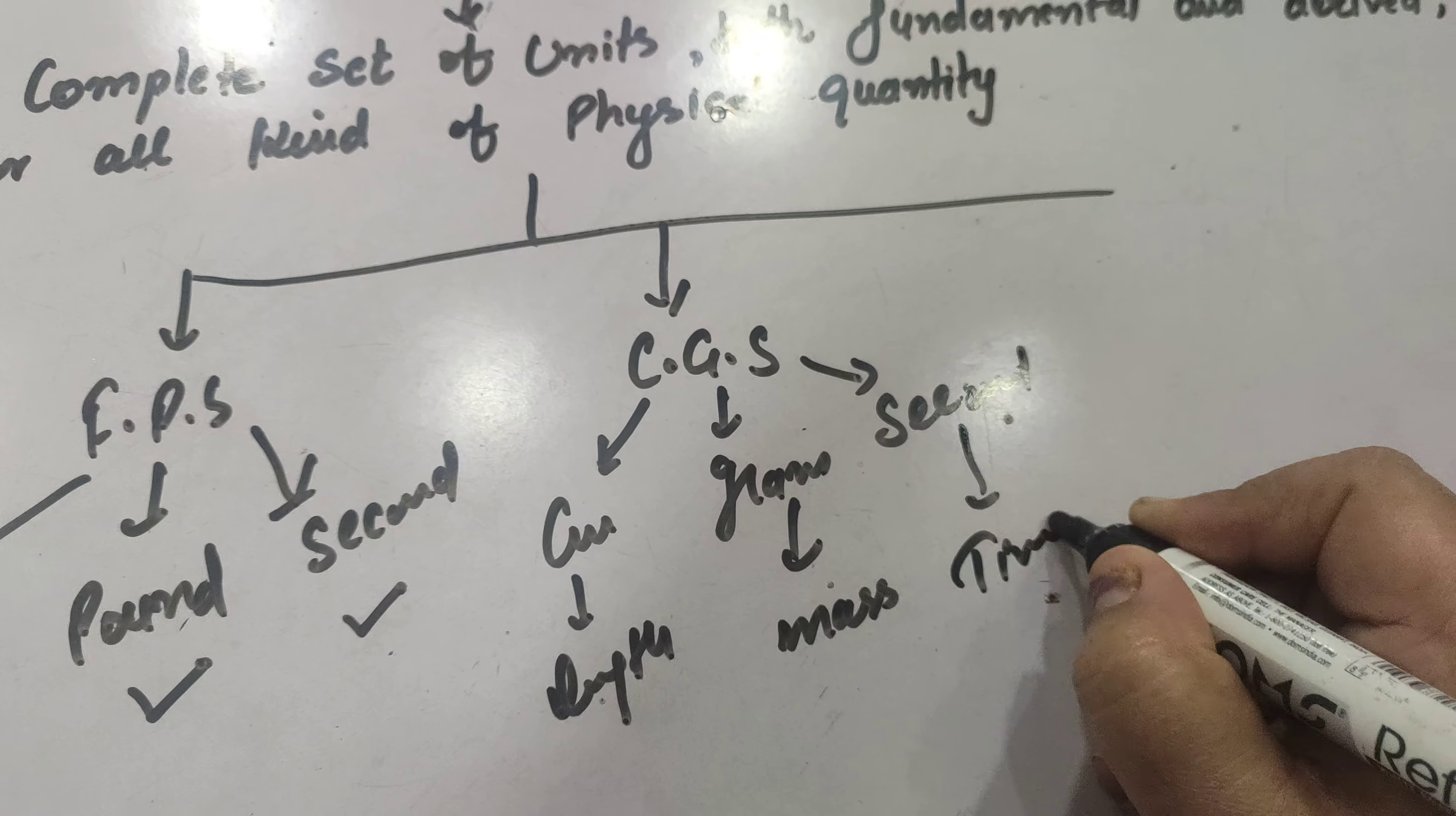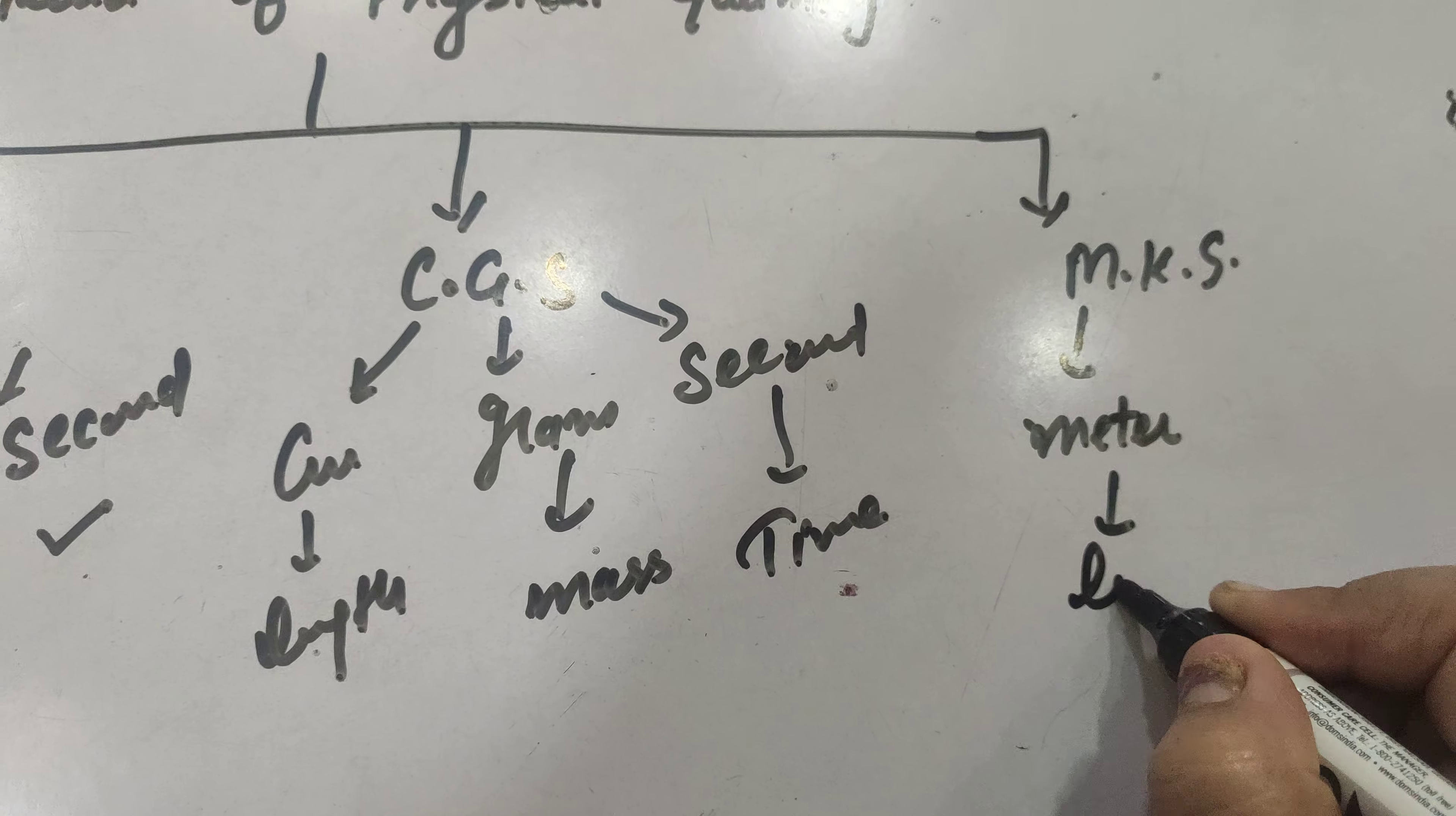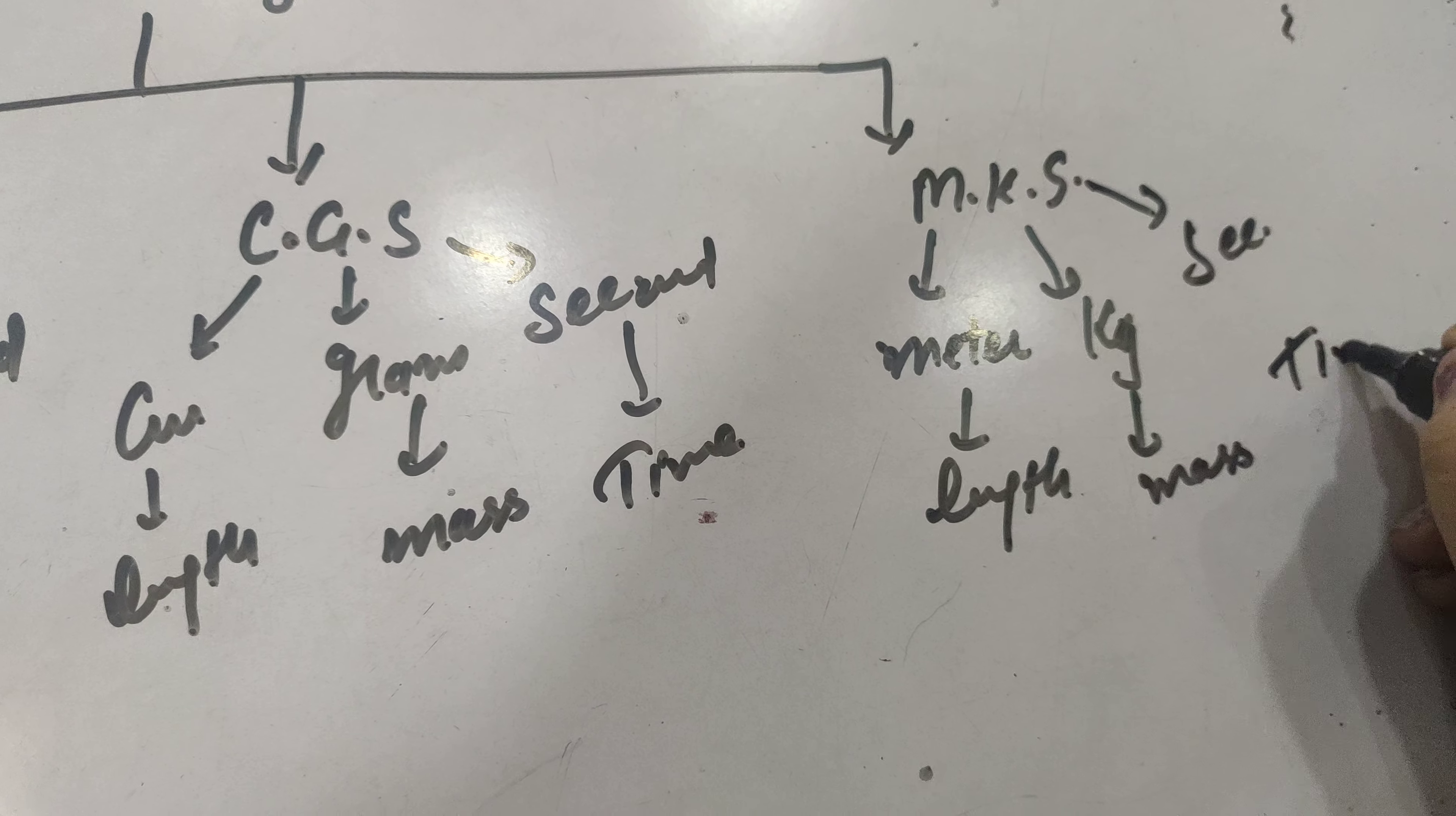And the third most commonly used system of unit is MKS: M for meter for length, K for kilogram for mass, and S for second for time.